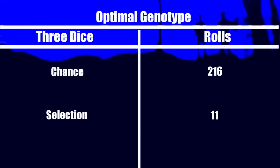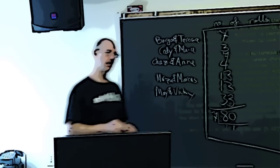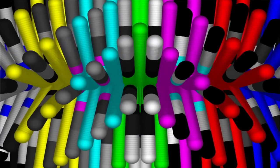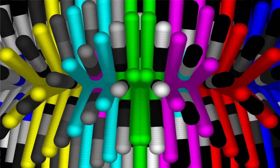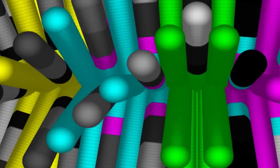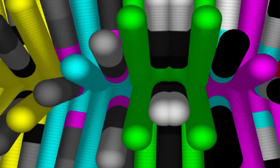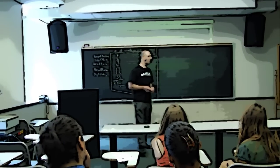About 11 rolls — that's a lot different from 216. Now this was with three dice, and in a genome there are a lot more genes than just three. Even the simplest viruses have more genes than just three. So what would happen if we added a lot more genes?